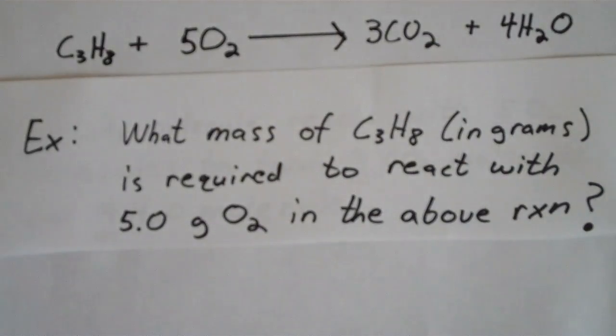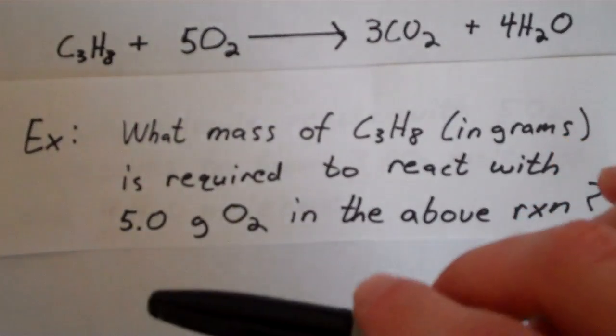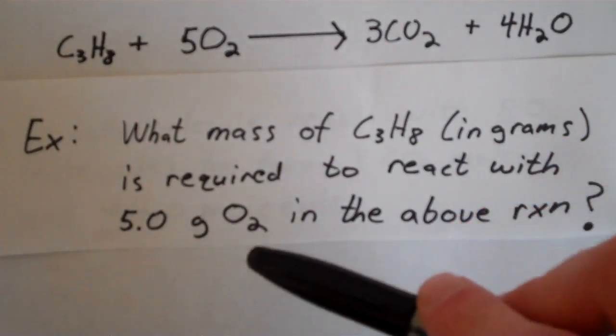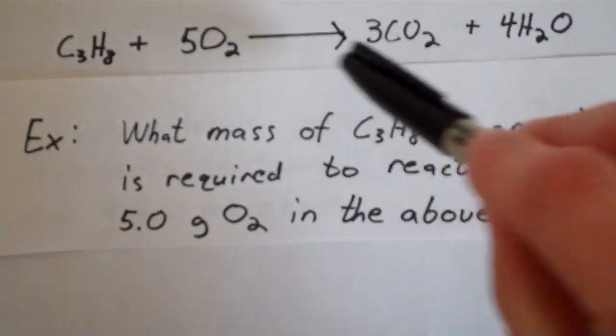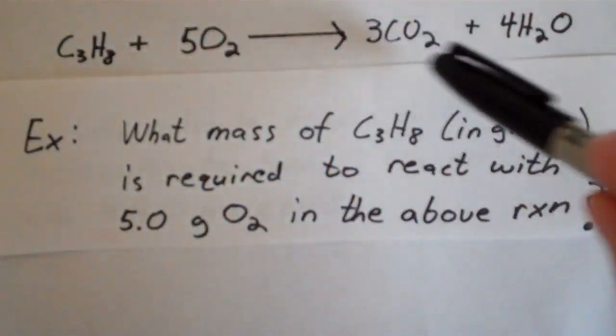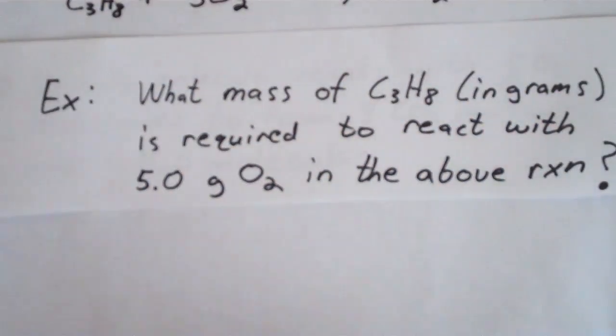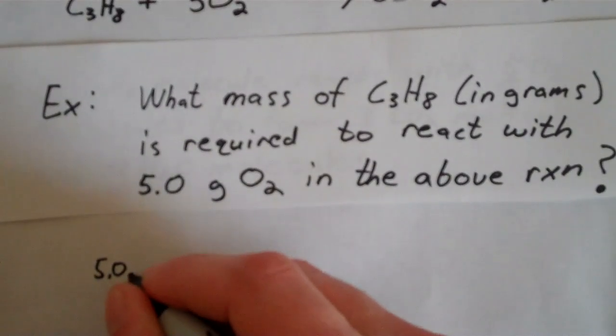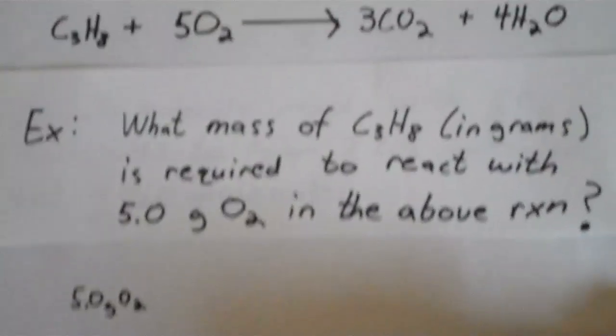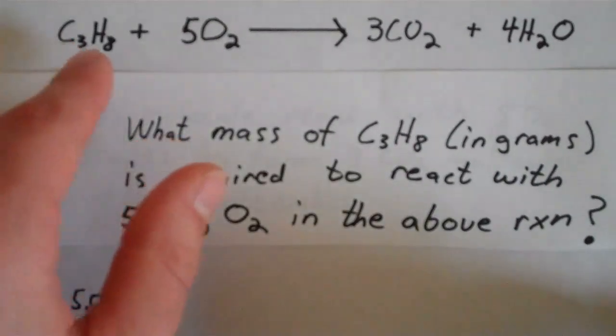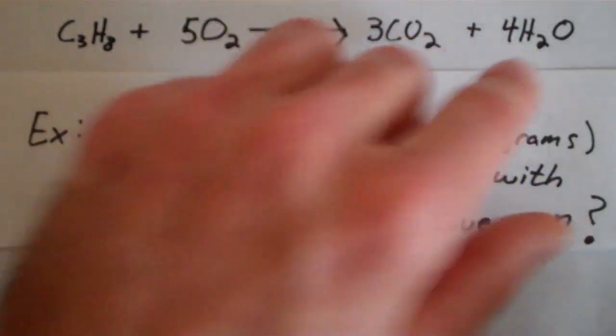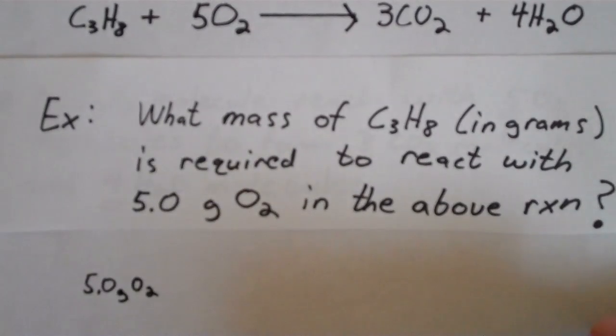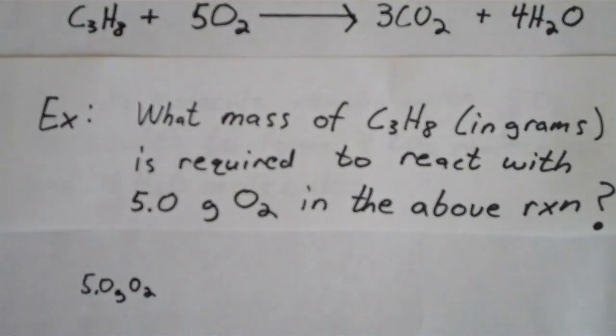So the only two known values that we have are the only two things that can help us: this mass of oxygen that is given and this balanced chemical equation up here. So it says we start out with 5.0 grams of O2, but like I said, this equation does not have anything to do with grams. It only has to do with moles. So we must convert this 5.0 grams of O2 into moles, using the molar mass given from the periodic table.